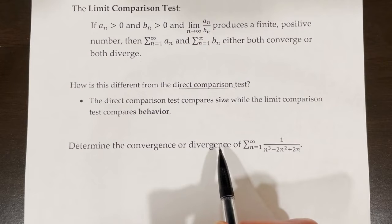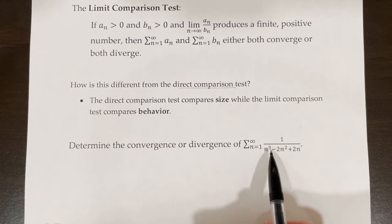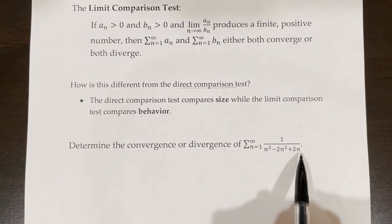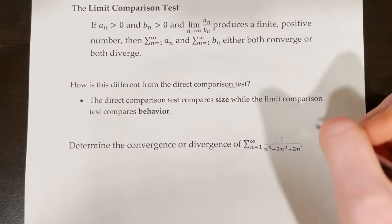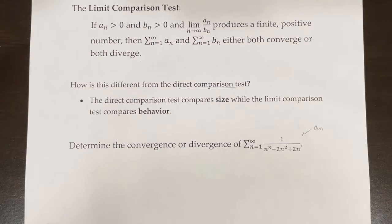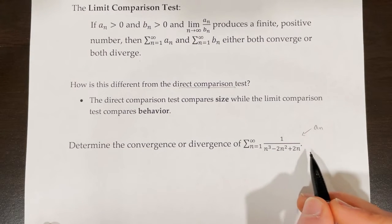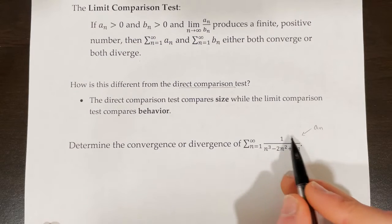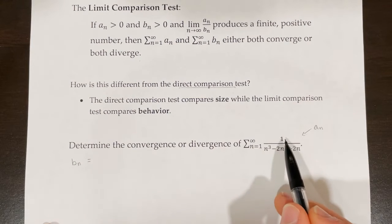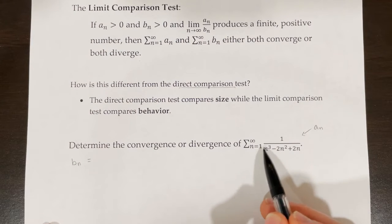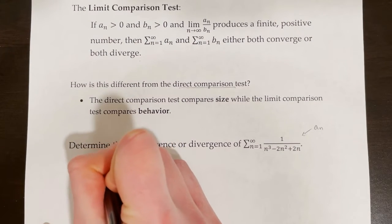Let's look at the limit comparison test through an example: determine the convergence or divergence of the series from n equals 1 to infinity of 1 over n cubed minus 2n squared plus 2n. First, we identify a_n and b_n. a_n is always the function we are given: 1 over n cubed minus 2n squared plus 2n. b_n is a function we think will behave similarly — n cubed is really what influences the magnitude in the long run, so b_n equals 1 over n cubed.